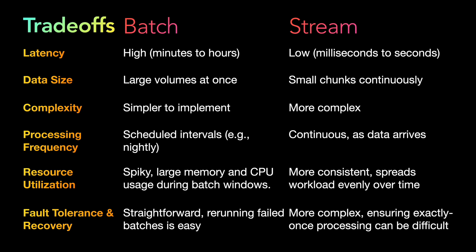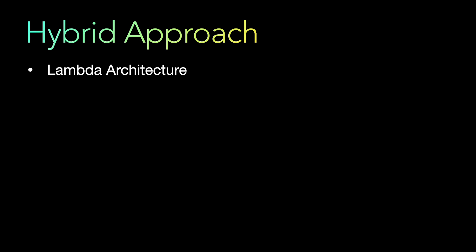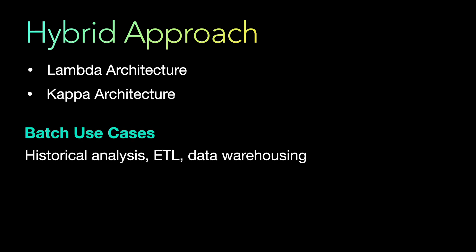There are cases where we use hybrid approaches as well. As seen in system design, there is no one-size-fits-all model. For large-scale distributed applications, you may need to implement both. Lambda architecture combines both batch and stream processing to provide accurate and comprehensive data views. Kappa architecture primarily focuses on stream processing but allows reprocessing of historical data if needed, making it a kind of hybrid approach.